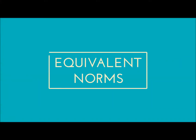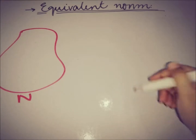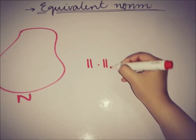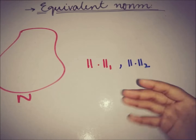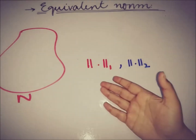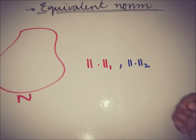Hello everyone, this is the game from the academy. Today we're going to see that if we have two norms, when will we say that the two norms are equivalent to each other. Let we have a normed space N, and we have two norms on the same normed space: the very first norm is norm 1 and the second norm is norm 2.